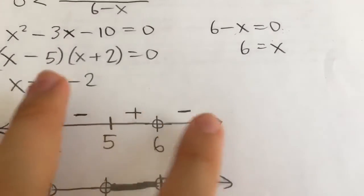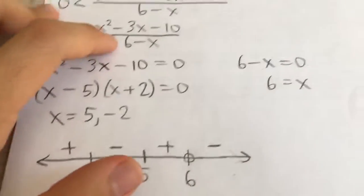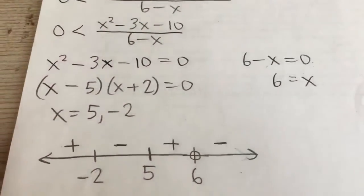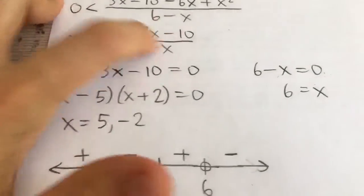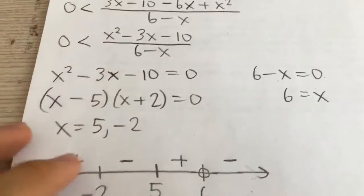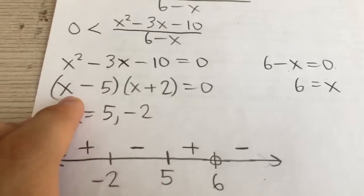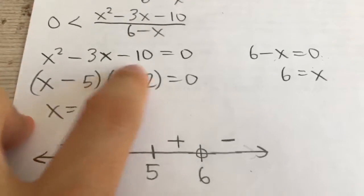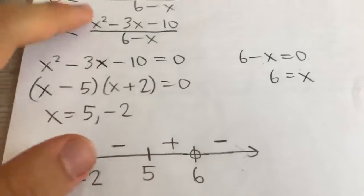And so we have four regions that we're going to test values of x in to see if this expression is positive or negative in that region. So if I test, say, negative 5, it's kind of hard to take a look at this expression at the top here. But what you can do is use these two factors. So this is going to be negative if I plug in negative 5. This is going to also be negative. So negative times negative, that's positive.